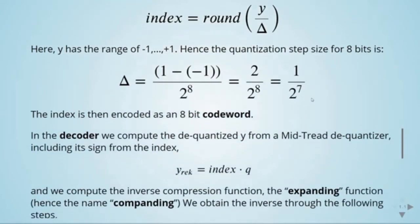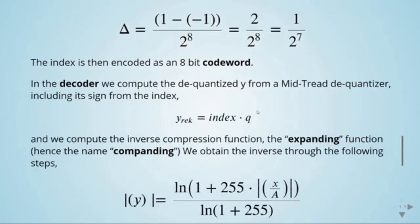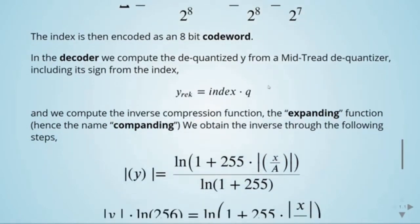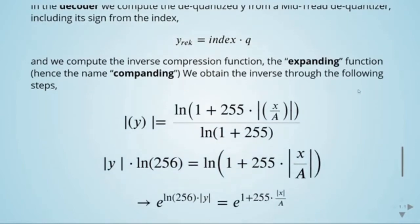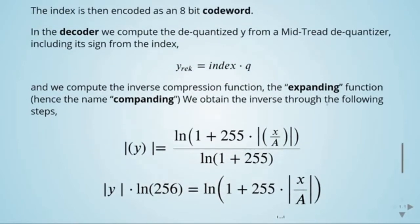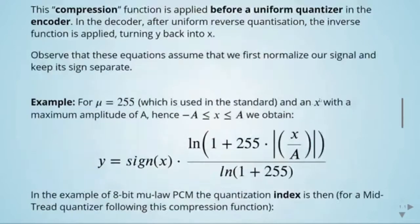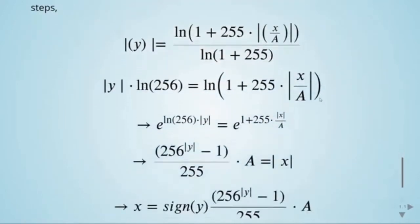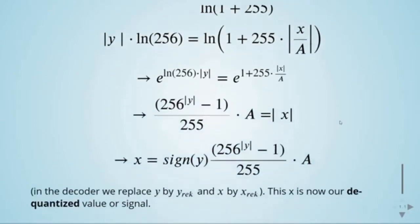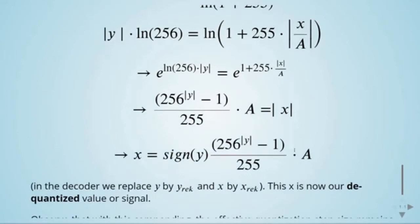In the decoder we compute the quantized y from the mid-tread quantizer including its sign from the index, and then compute the inverse compression function — the expanding function. Starting from the compression function equation, we apply the exponential on both sides, and derive that the inverse is given by a function that recovers x from y.